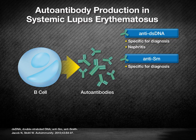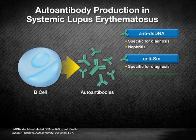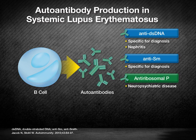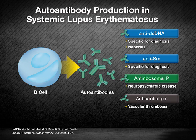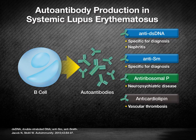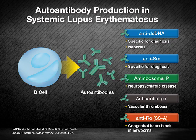Other autoantibodies are linked to certain clinical manifestations of lupus. For instance, anti-ribosomal P antibodies are associated with neuropsychiatric disease and anti-cardiolipin antibodies are associated with a heightened risk of intravascular thrombosis. Other autoantibodies are pathogenic, such as anti-SSA antibodies in neonatal lupus.